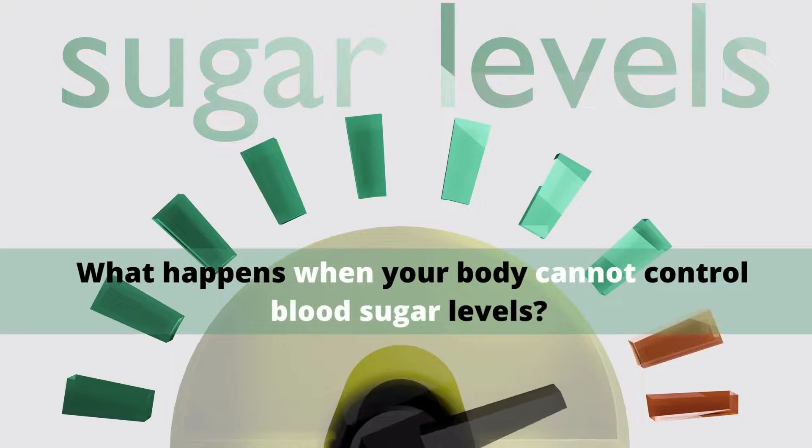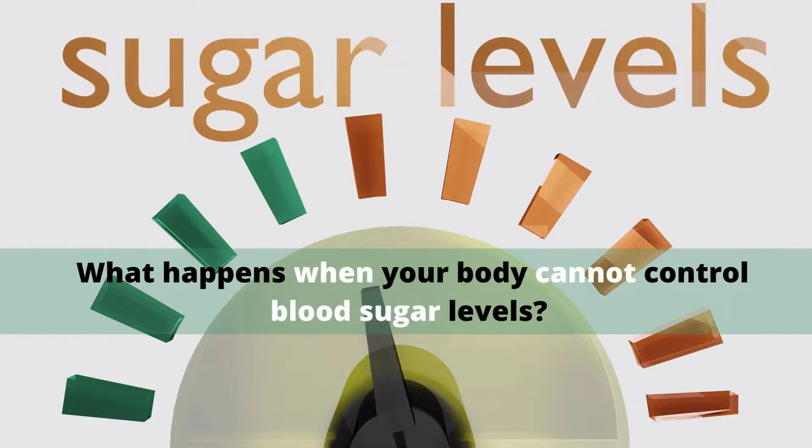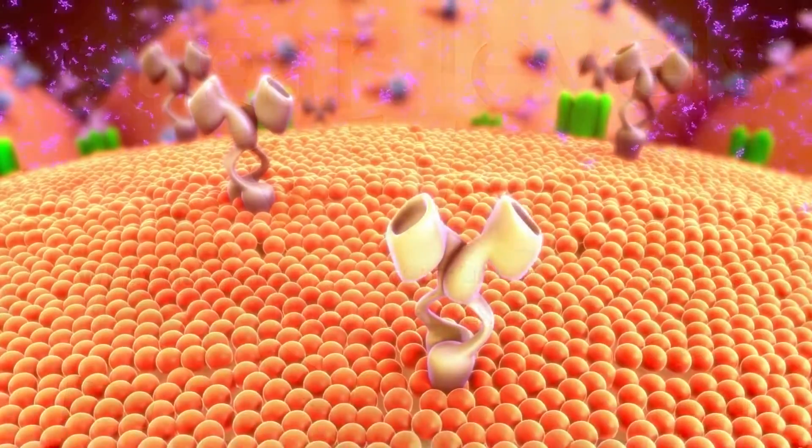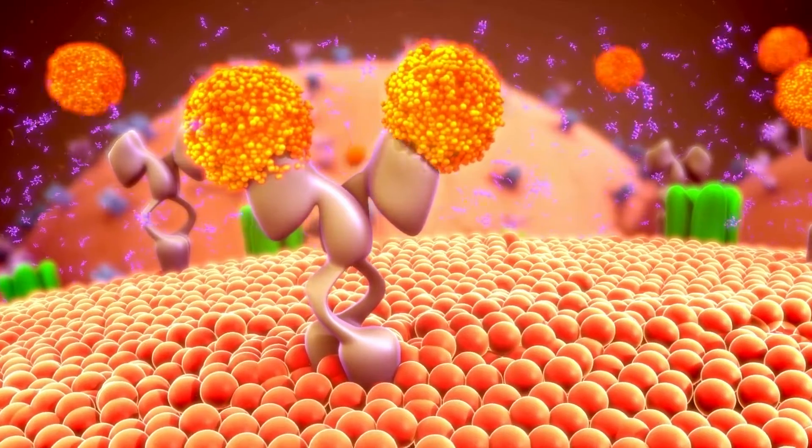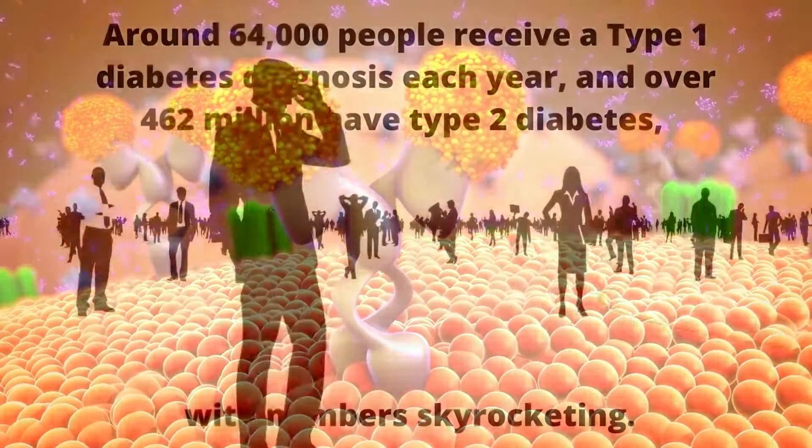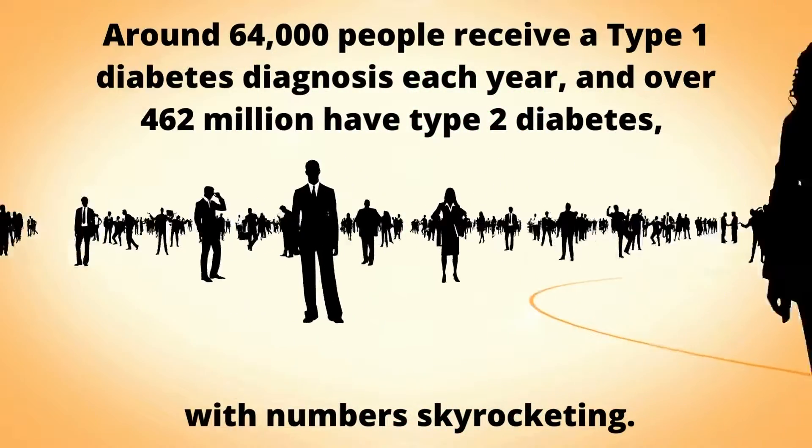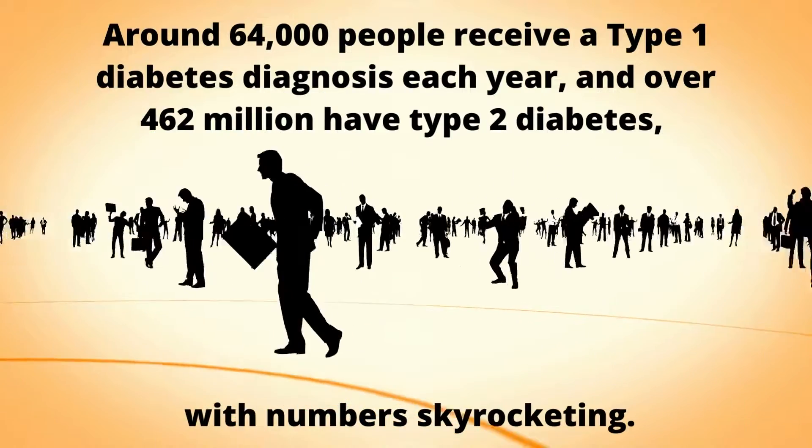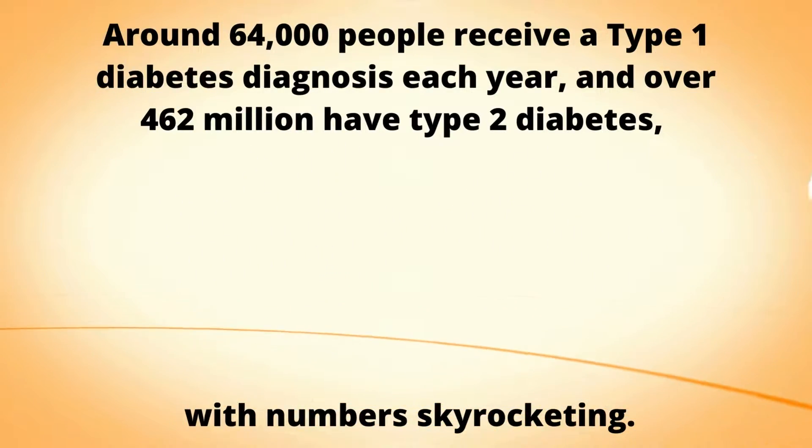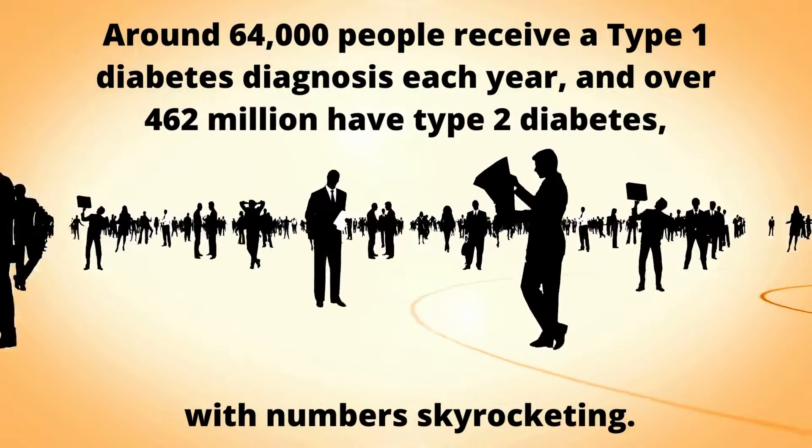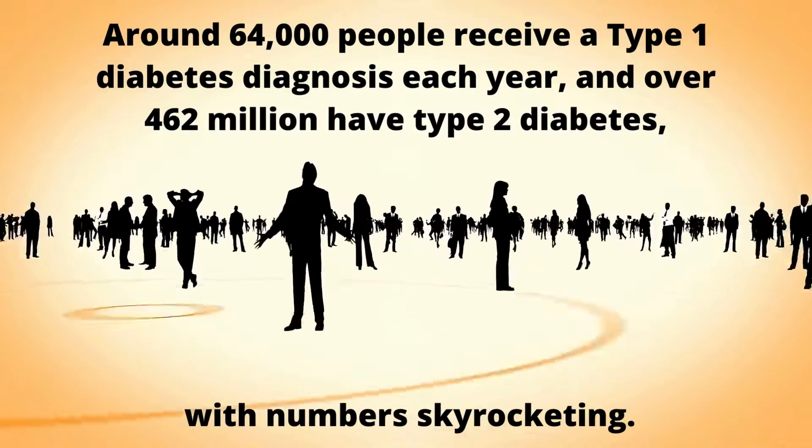What happens when your body can no longer control blood sugar levels? Your body can no longer make enough insulin or the cells become insulin resistant. Around 64,000 people receive a type 1 diabetes diagnosis each year and over 462 million have type 2 diabetes with numbers skyrocketing.